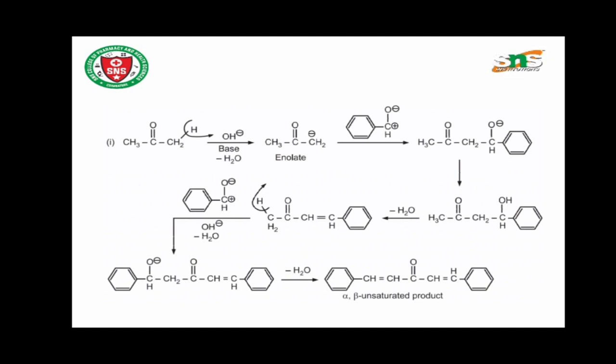One molecule of benzaldehyde reacts with this enolate, so the compound is converted to the intermediate CH3-CO-CH2-CH(O⁻)-C6H5.